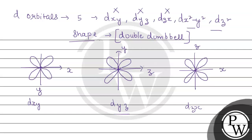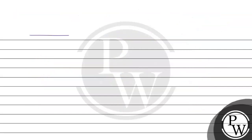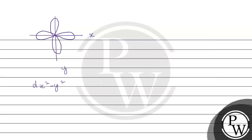Now let us see for the dx²y² and dz². For dx²y², the electron density lies along the x-axis and the y-axis - it is along the x-axis.